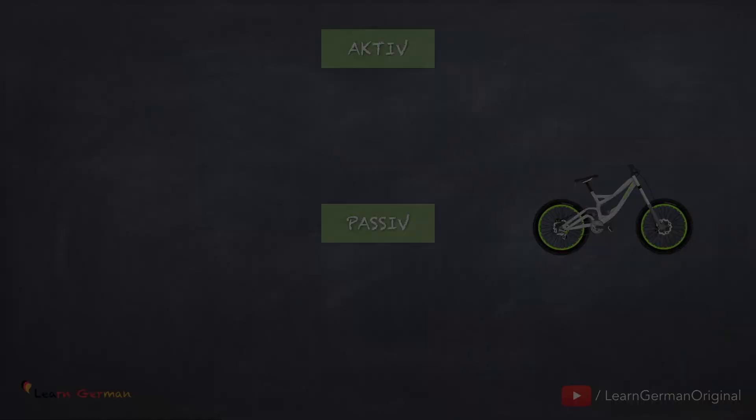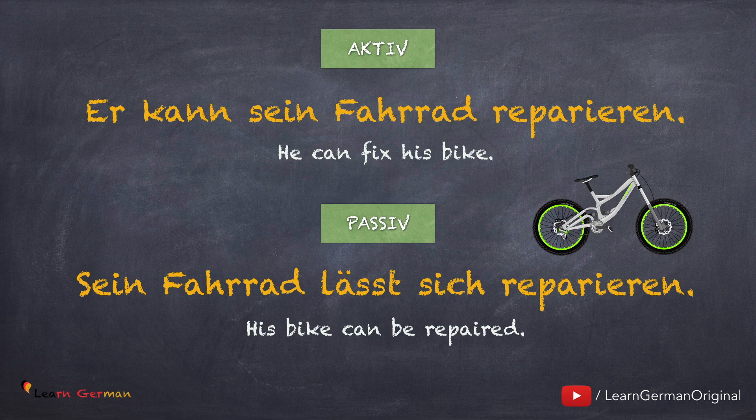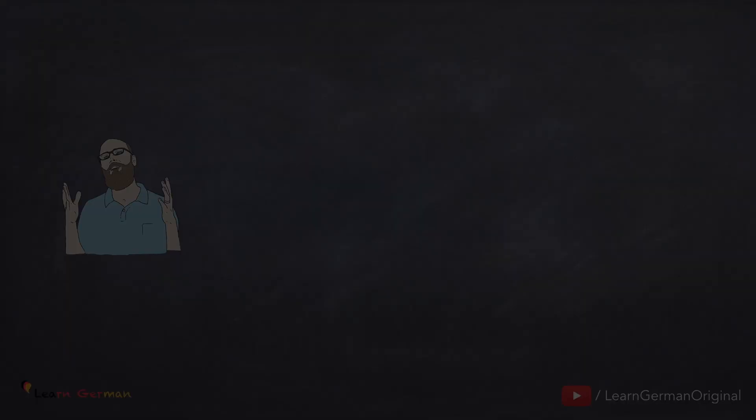Hier ist noch ein Satz: Er kann sein Fahrrad reparieren. Der Satz in Passiv heißt: sein Fahrrad lässt sich reparieren. Der Akkusativobjekt in dem aktiven Satz — sein Fahrrad — ist jetzt der nominative Subjekt in dem passiven Satz. Der Täter er fehlt weg.